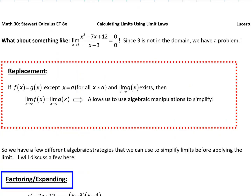The property we've utilized here is called the replacement property. If we have two functions f of x and g of x that are equal except at x equals a, and the limit of g of x as x approaches a actually exists, then the two limits must be the same. This allows us to use algebraic manipulations to simplify.